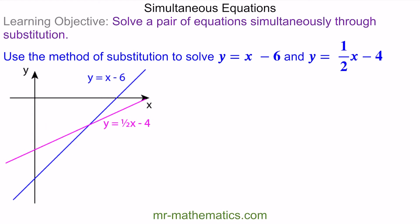Because we know that y is x minus 6, we can substitute this y here. Now we can write this as one equation with one variable. So we have x minus 6, which is this y here, equals one half of x minus 4.